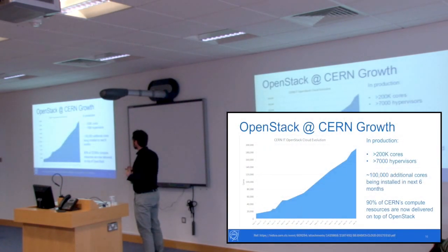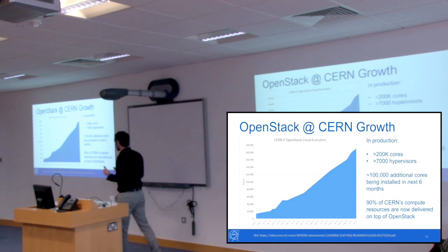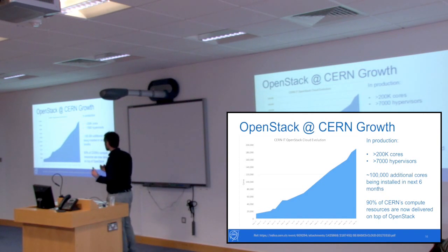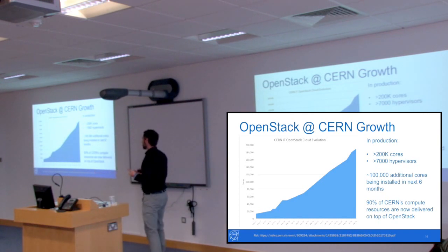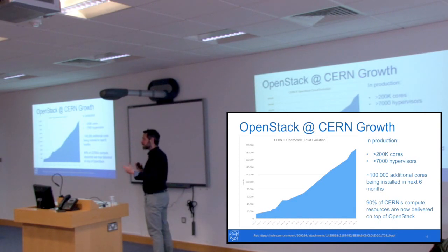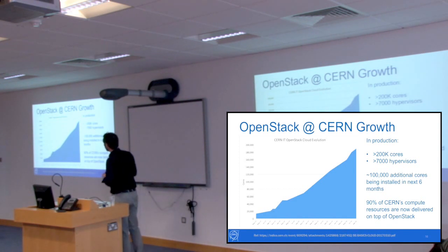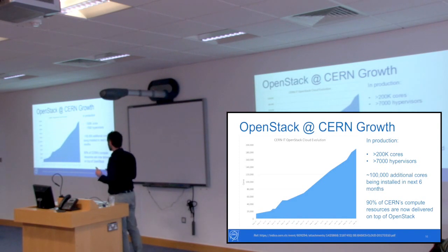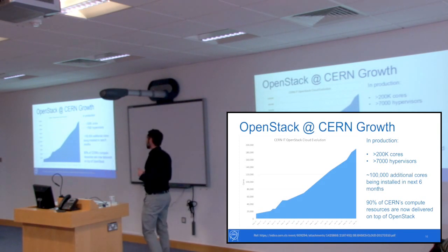Another example I've worked with in a previous role is CERN — one of the largest research sites in Europe that has aggressively adopted OpenStack. They have more than 200,000 cores and 7,000 systems in their OpenStack deployment, and are one of the spearhead organisations that has taken on this OpenStack project at scale. Ninety percent of CERN's compute resources are now delivered on top of OpenStack.